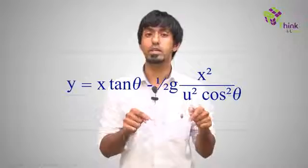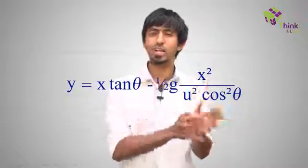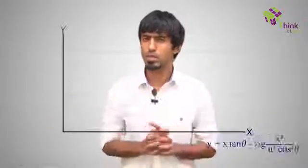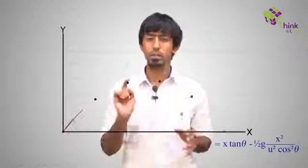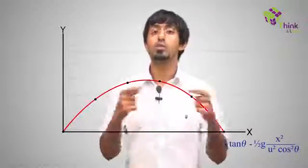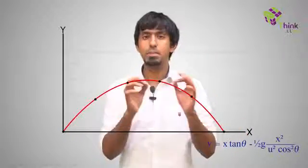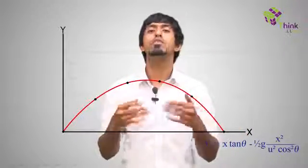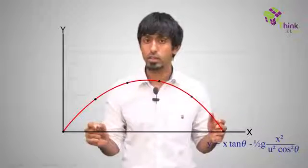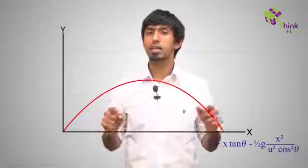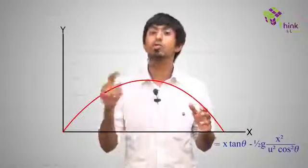Observe that this has only y and x, does not have time in it. So, it's a direct connection between y and x which means that for every point in x, you can start plotting what the y values are and if you do that, this is how it will look. So, this is the path that a body will take if it had been thrown on the surface of the earth and now that you have this path, let's see how we can connect this to what we already know.